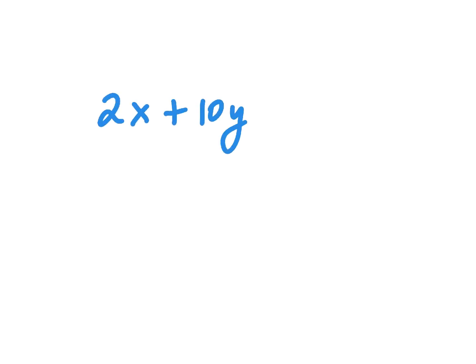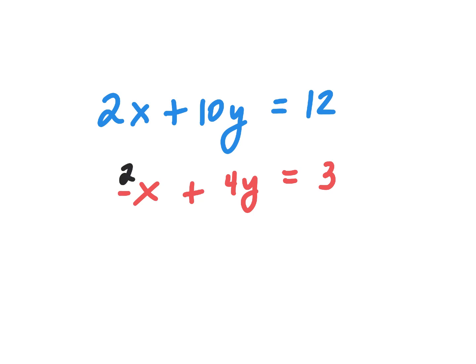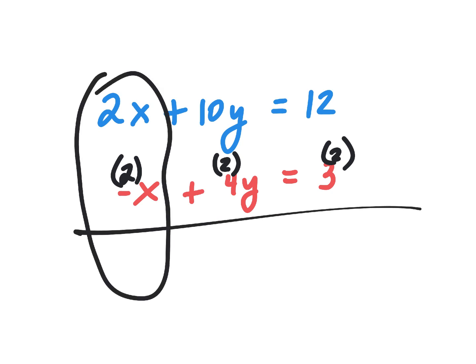Let's see if you can do it when I step up the difficulty level a little bit, because this is more like the test. 2x plus 10y equals 12. Negative x plus 4y equals 3. Now, can I just add those straight down and have something eliminate? Nope. So what should I do first? Times the bottom one by 2 — multiply each of those by 2. Why did you do that, Ainsley? To make it negative 2x so that those guys will cancel.